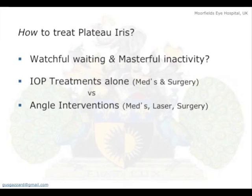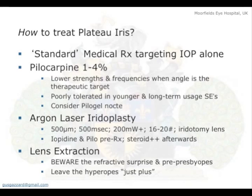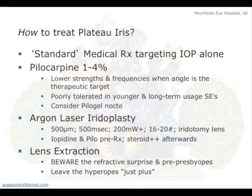So: watchful waiting, masterful inactivity — all those wonderful terms we learnt at medical school for doing nothing but in an intelligent way. IOP treatments alone — treat the IOP and nothing else. Or angle interventions: medicines, laser, surgery. We've got the standard medical treatments for targeting IOP that we know so well. Pilocarpine — not as a pressure-lowering treatment but as an angle-modifying treatment — may be better tolerated because you can use lower concentrations. When the angle is your therapeutic target, you can reset the intensity you need. But it remains poorly tolerated in the young and has long-term side effects such as cataract and a persistently myosed pupil. Argon laser iridoplasty, popularised by Bob Rich, certainly works very well in some. And then lens extraction.